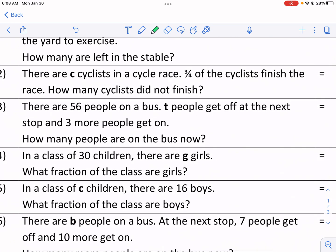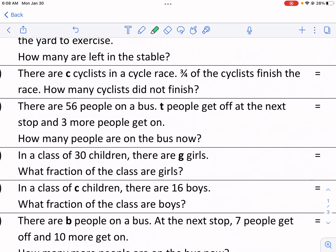Number 2 is actually a little bit tougher. There are C cyclists. So we don't know how many, an unknown amount. And 3 fourths of the cyclists finish the race, how many do not finish?